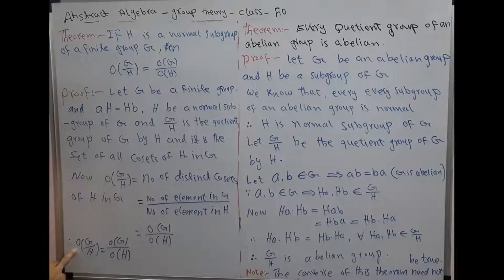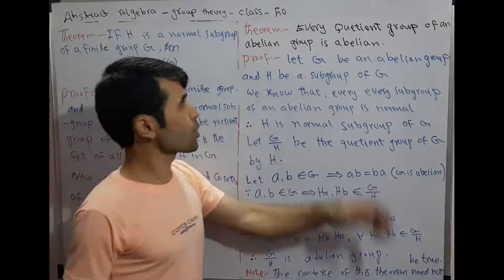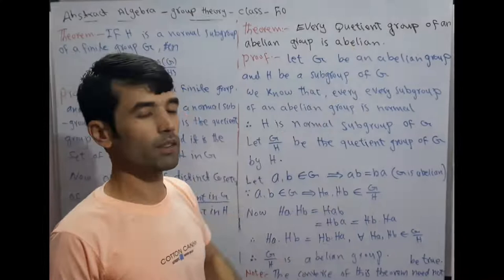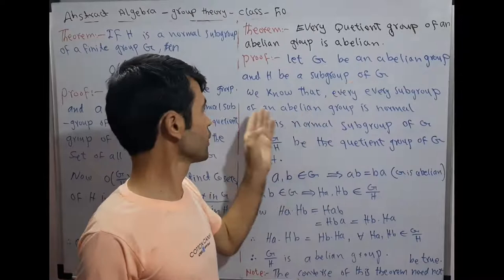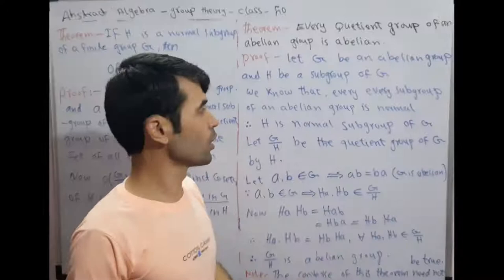Next theorem: every quotient group of an abelian group is abelian. We now prove this theorem. Let G be an abelian group and H be a subgroup of G. We know that every subgroup of an abelian group is normal.